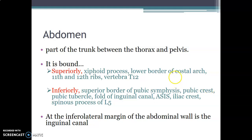The abdomen is part of the trunk located between the thorax and the pelvis. The superior boundaries are the xiphoid process, which is the terminal portion of the sternum, then the lower border of the costal arc, the 11th and 12th ribs, and on the posterior aspect, the 12th thoracic vertebra.